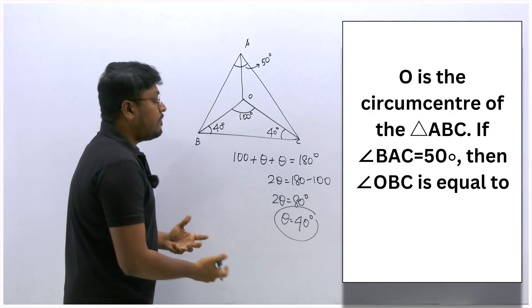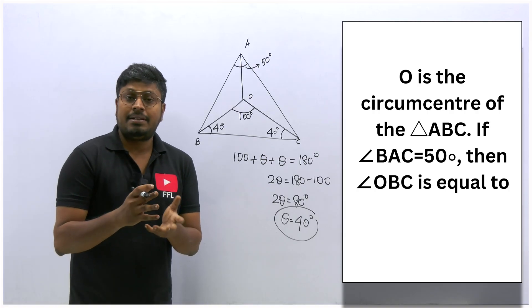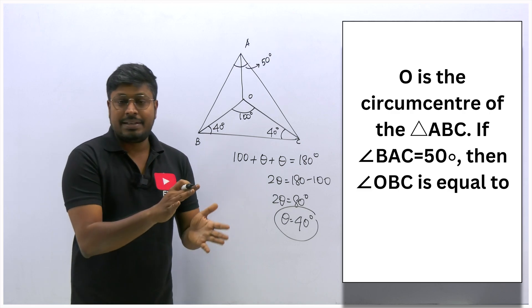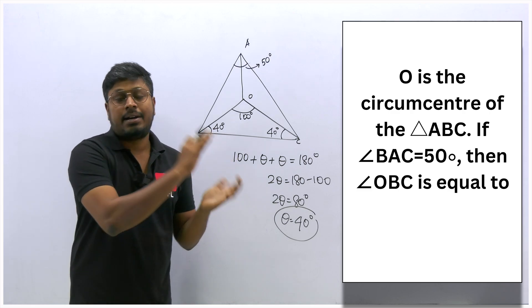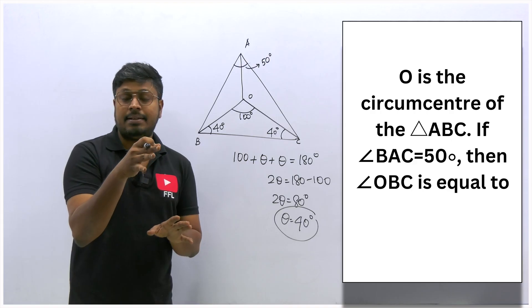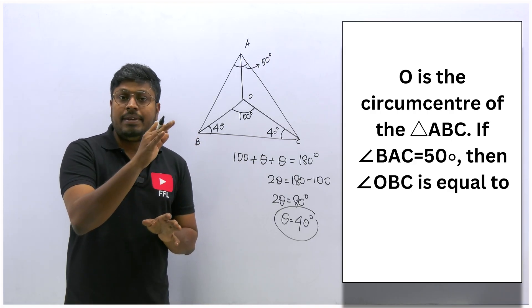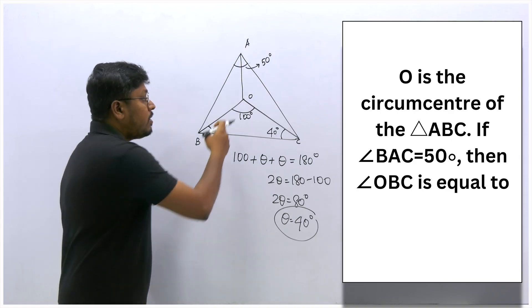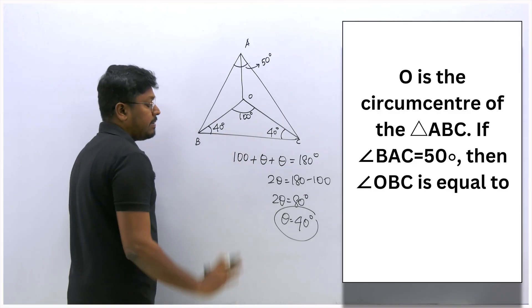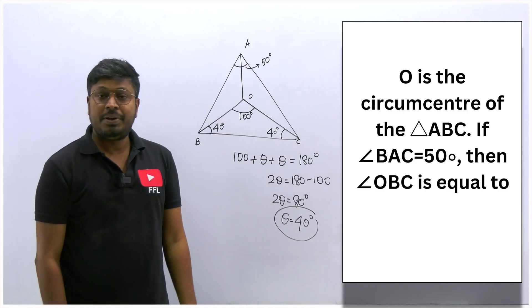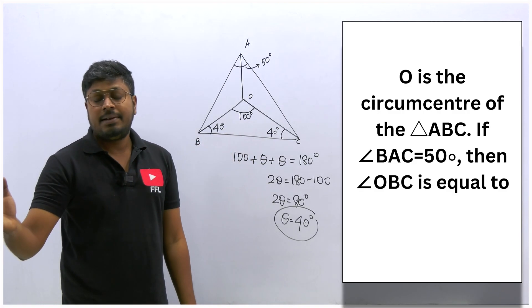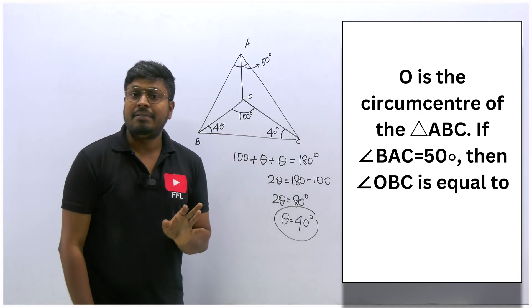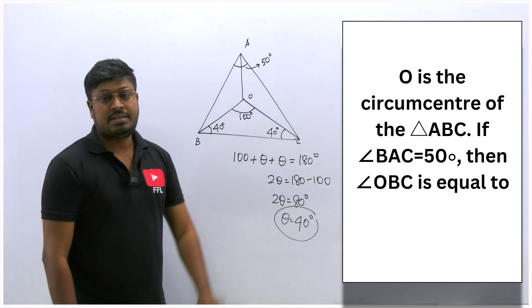No formula was used here. Circumcenter questions are generally easy like centroid questions—only incenter requires more careful thought. The key: the opposite angle doubled gives the circumcenter angle, and the sub-triangles are isosceles so both base angles are equal.